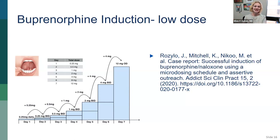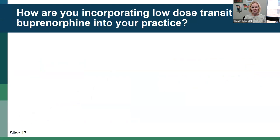Here is an example of a microdosing schedule. In this table day 7 has someone on 12 mg, but in my practice many patients by day 4 or 5 are up to 16 mg a day and able to escalate their dose. Sandy, are you doing many of these microinductions? Have your patients been successful? Are you sending them with any PRNs around withdrawal and symptom management so they can do this dose escalation at home comfortably?